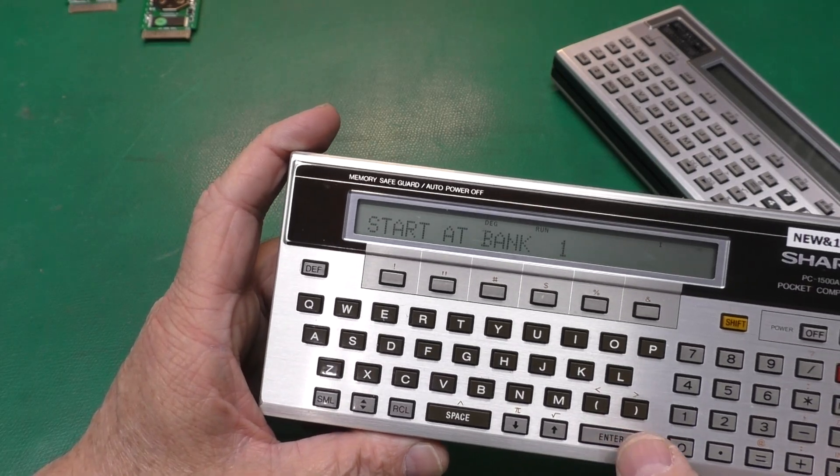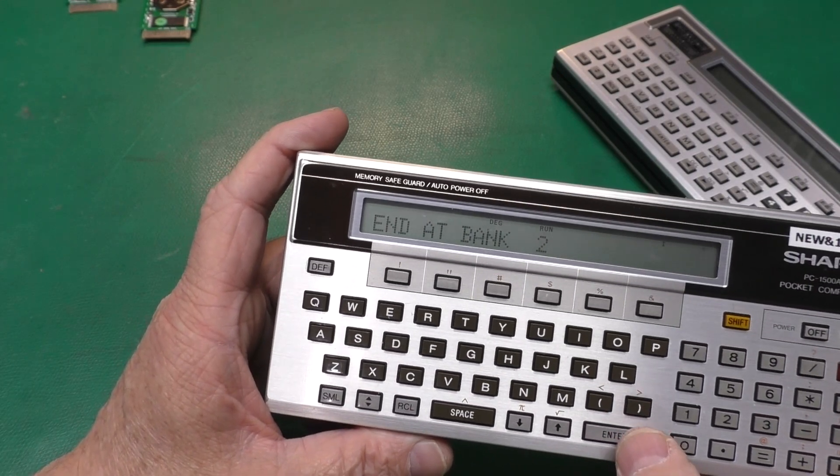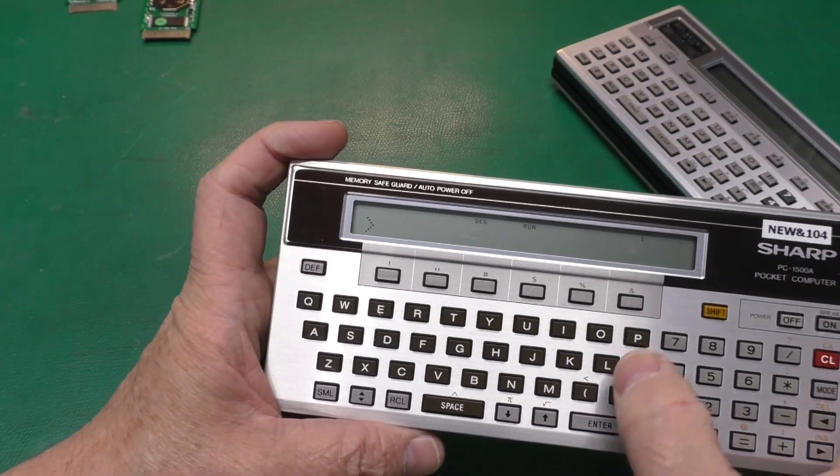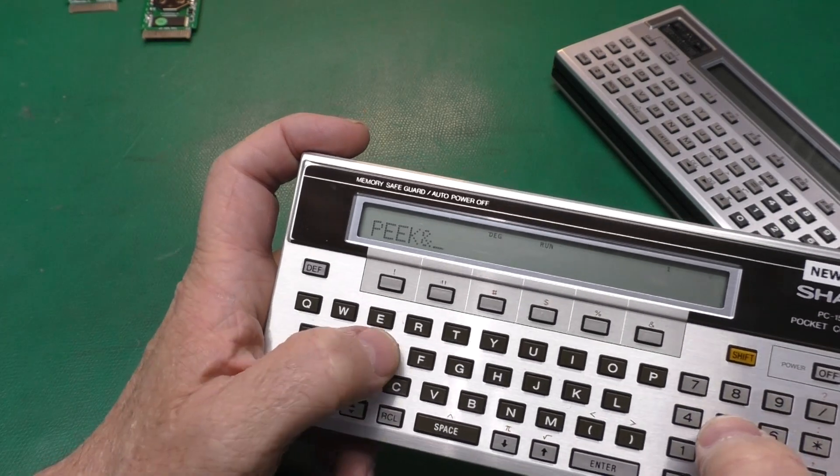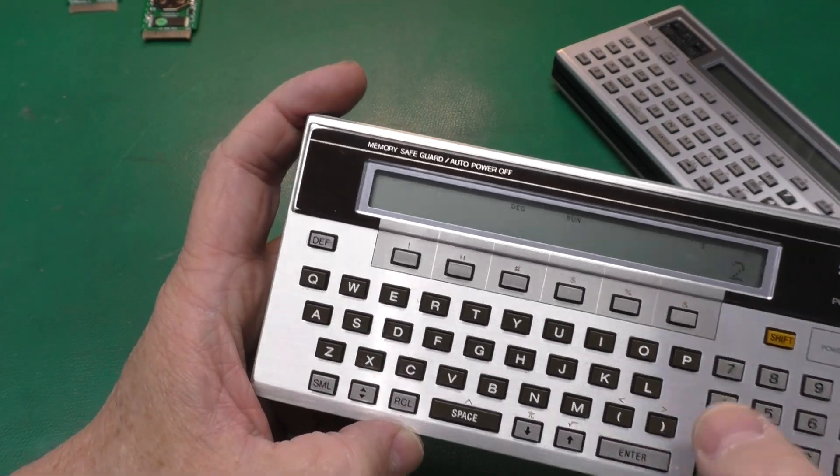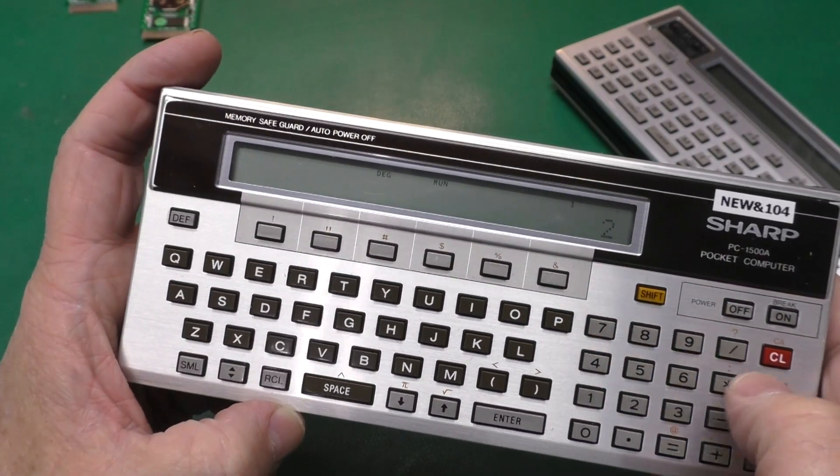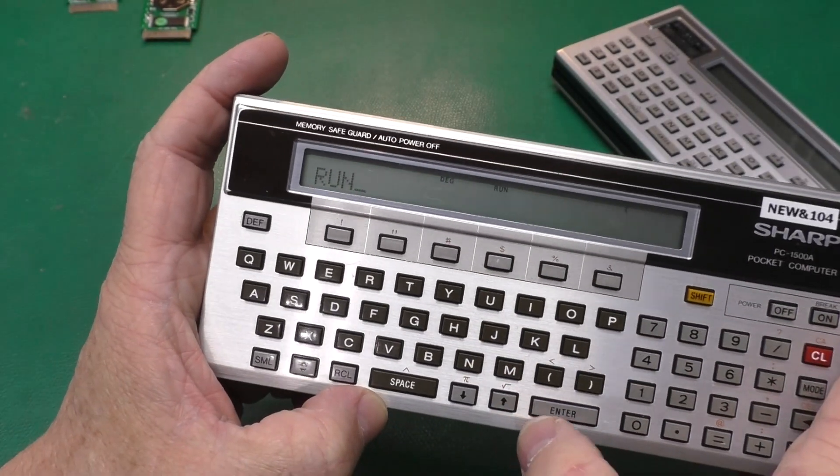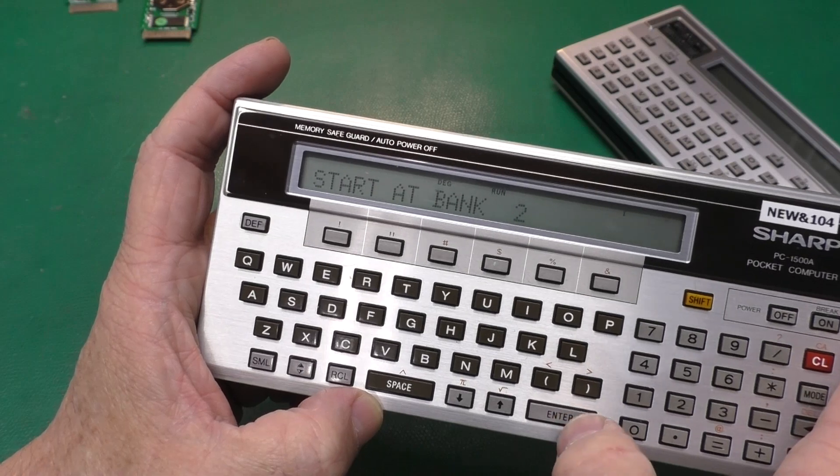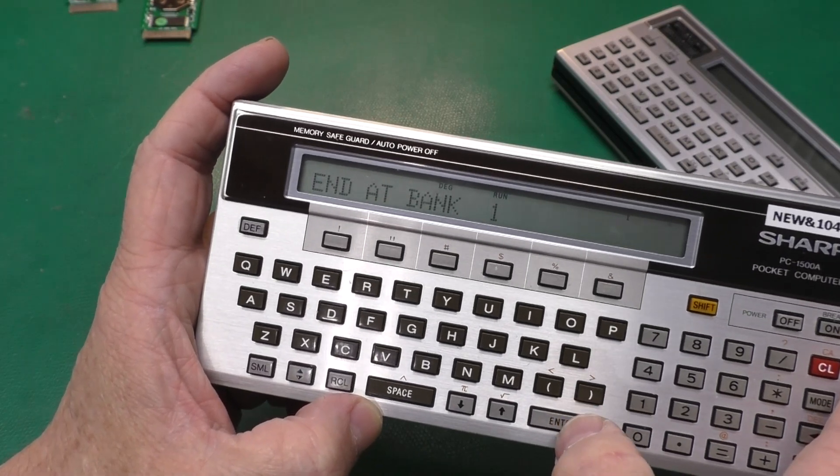We'll say we're starting on bank one, but we ended at bank two. So now we're in bank two. We can verify that by going peak d4. We're in bank two. And run. We're starting at bank two. We're ending at bank one.